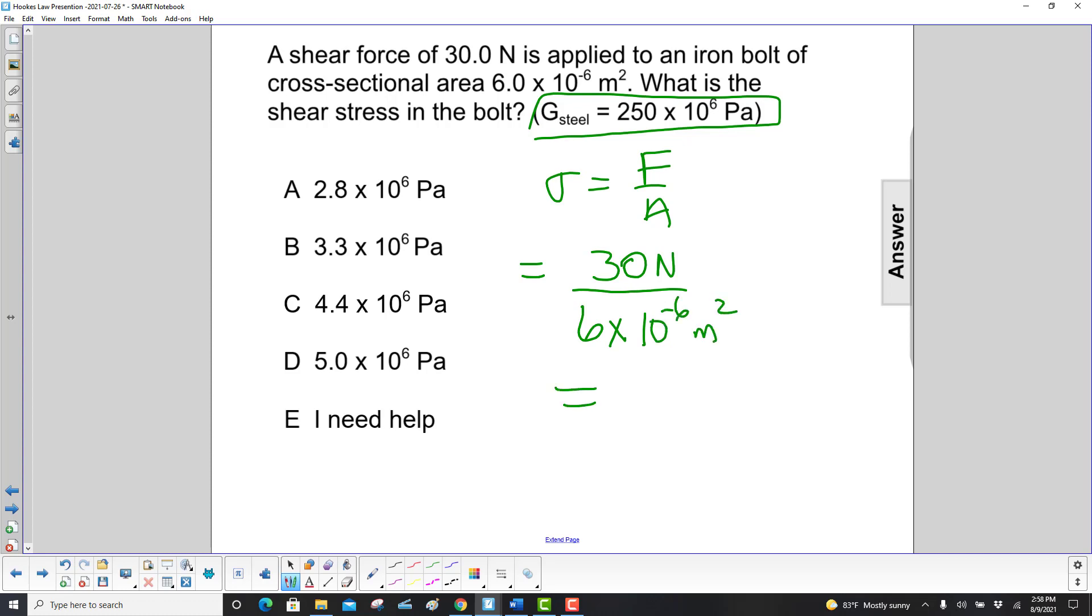Carry out the division, and we get answer D: 5 times 10 to the 6 pascals, or newtons per square meter, same units.